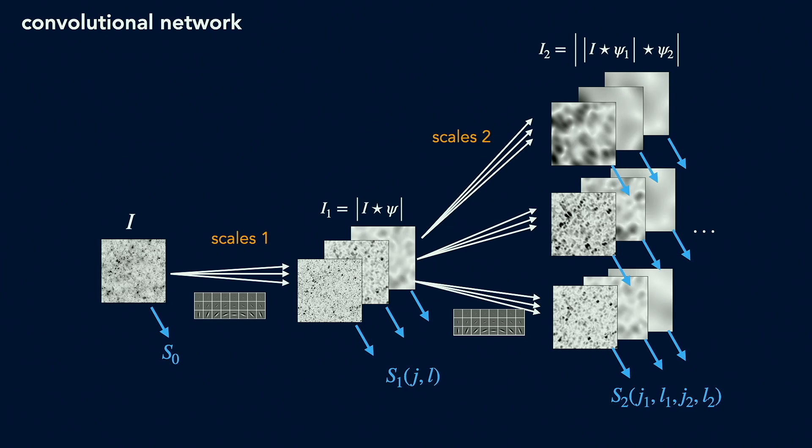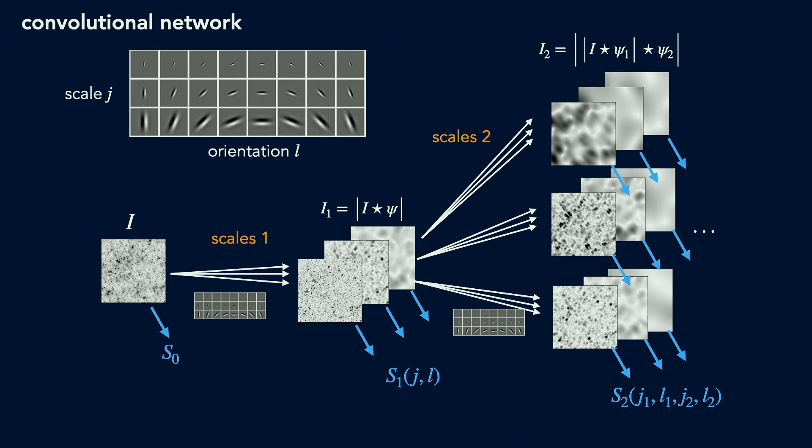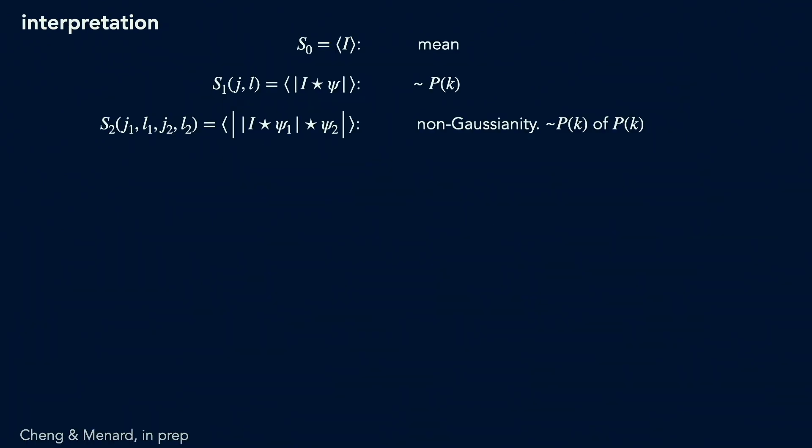So if we explicitly draw all the scale combinations, you can see that the structure of the scattering transform is similar to a convolutional neural net. The difference is that you don't need to learn the kernel. Now the kernels are preset. There are families of wavelet which have different scales and orientations.